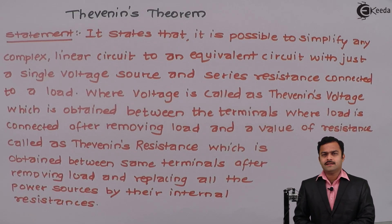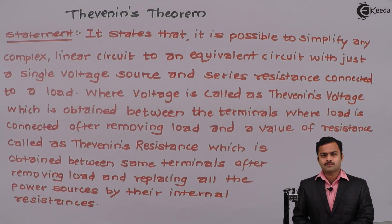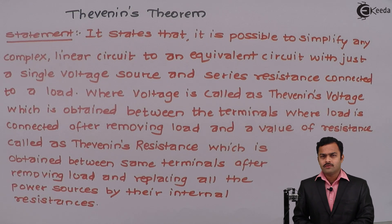Hi friends, many times in electrical circuits it may happen that many circuit elements are given — more resistances, voltage sources, and current sources — and we are supposed to find out the current or voltage across a particular branch. At that time it is better to reduce that circuit into a simple one so that Ohm's law can be applied. Here we are going to learn a new theorem called Thevenin's theorem.